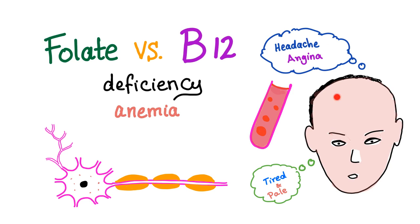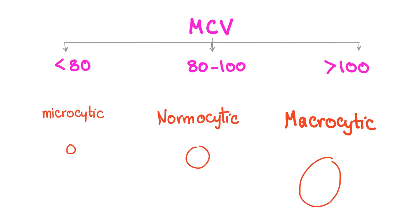Again, these are the symptoms of any anemia. We have said again and again, the MCV determines is the anemia microcytic, normocytic, or macrocytic. Macrocytic anemia has more than 100 femtoliters of MCV.